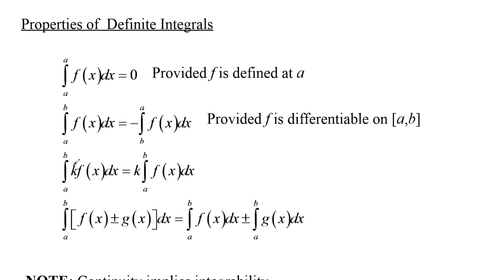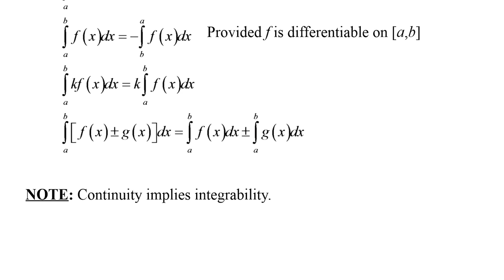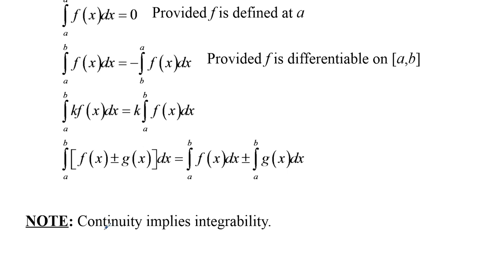And then if you have, then this is kind of a constant multiple rule. If you have a constant times a function, you can bring that constant out and then do the integral of just the function. And then if you have the sum of two functions over an interval from a to b, then you can take each of those, the integral of each of those functions over a to b separately, and then add those together. And then a little note here, continuity implies integrability, which is very good.